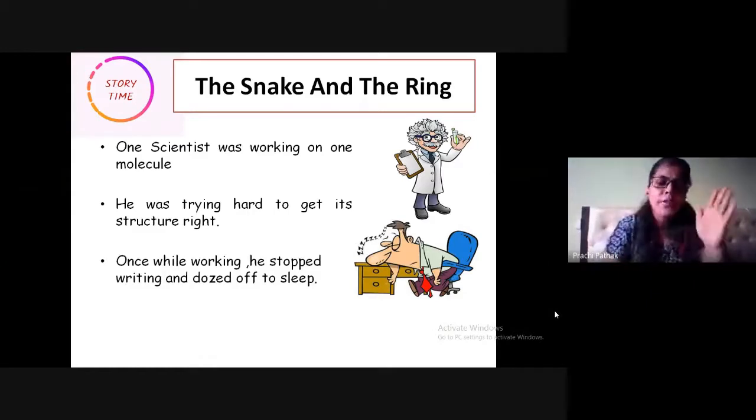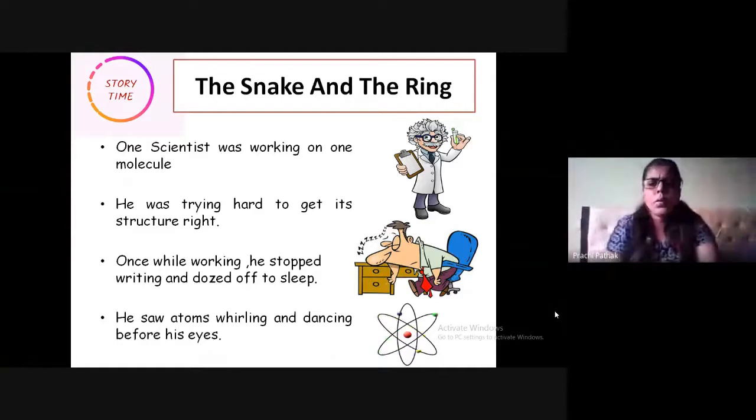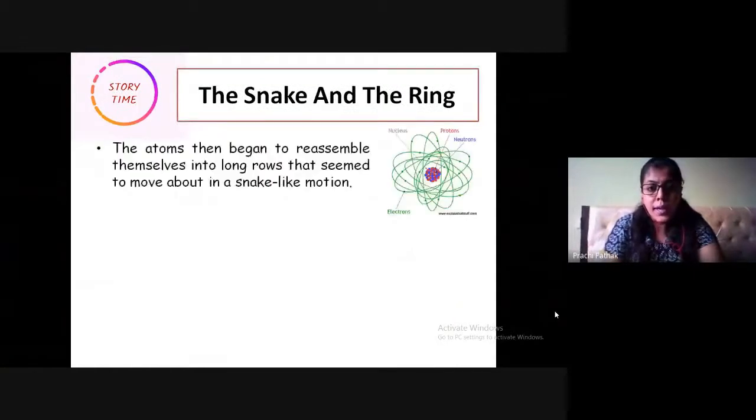Once while working very hard on drawing the structure of the molecule, he stopped working and dozed off to sleep. He saw a lot of atoms whirling around, dancing before his eyes when he was sleeping. The atoms then began to resemble themselves into long rows that seemed to move like a snake.